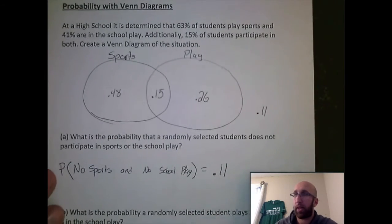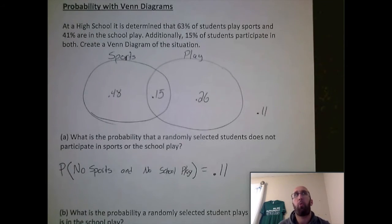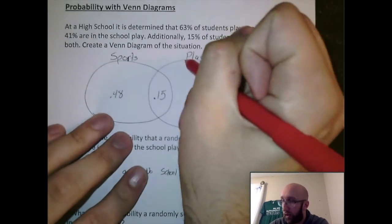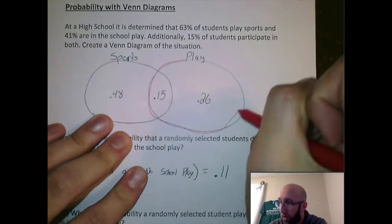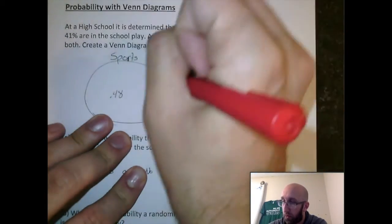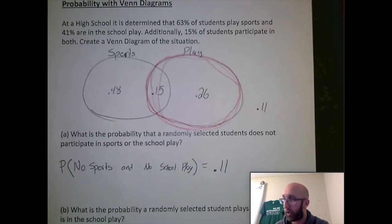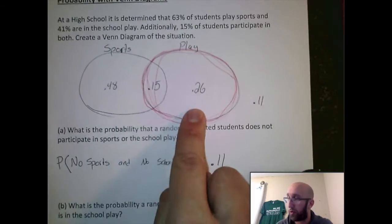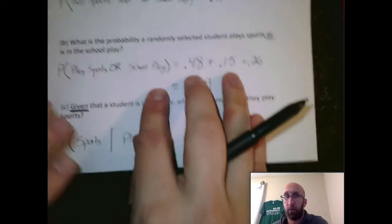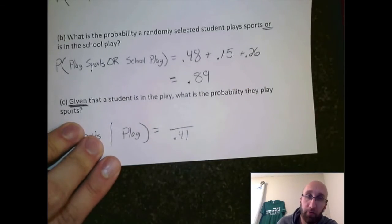Now this is a type of problem that you can kind of visualize what's going on. So what they tell us is that we are in the school play circle. We're in this entire circle. I already know this information. We are in the school play circle. So this .15 and this .26, the size of that circle is 0.41.